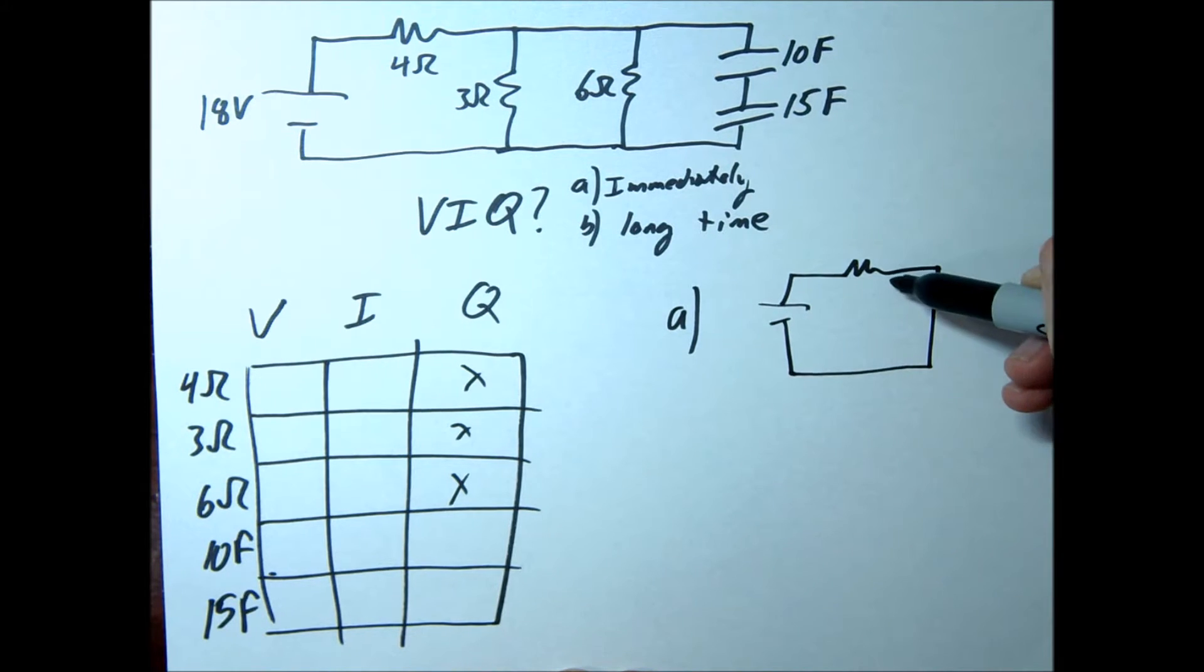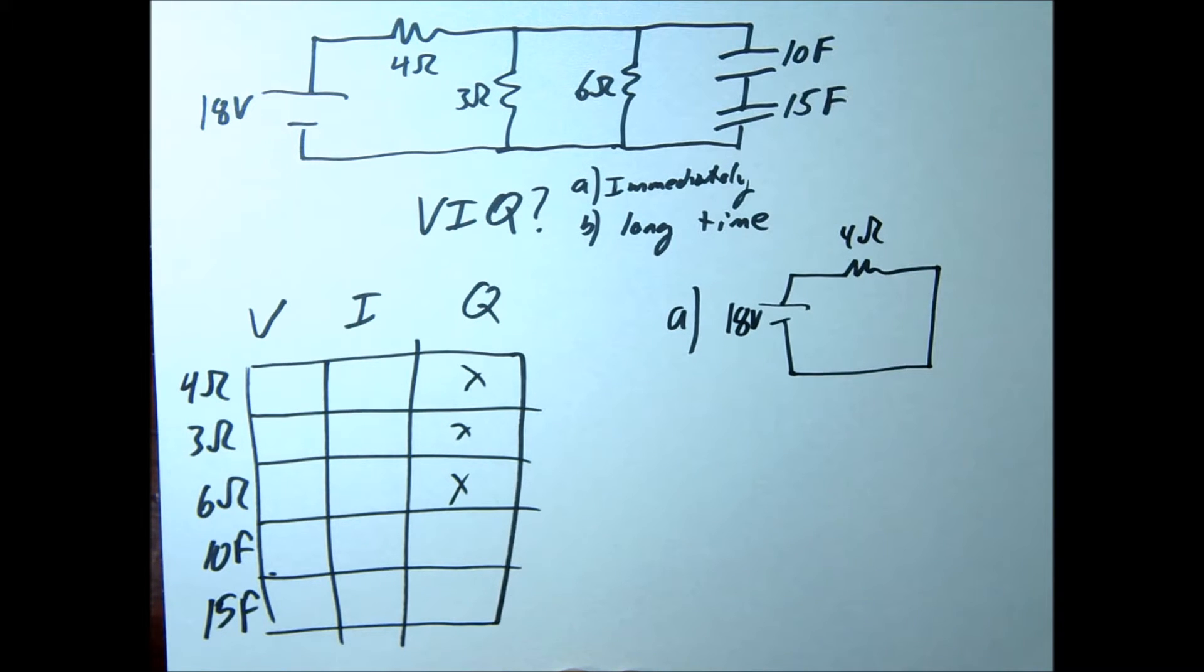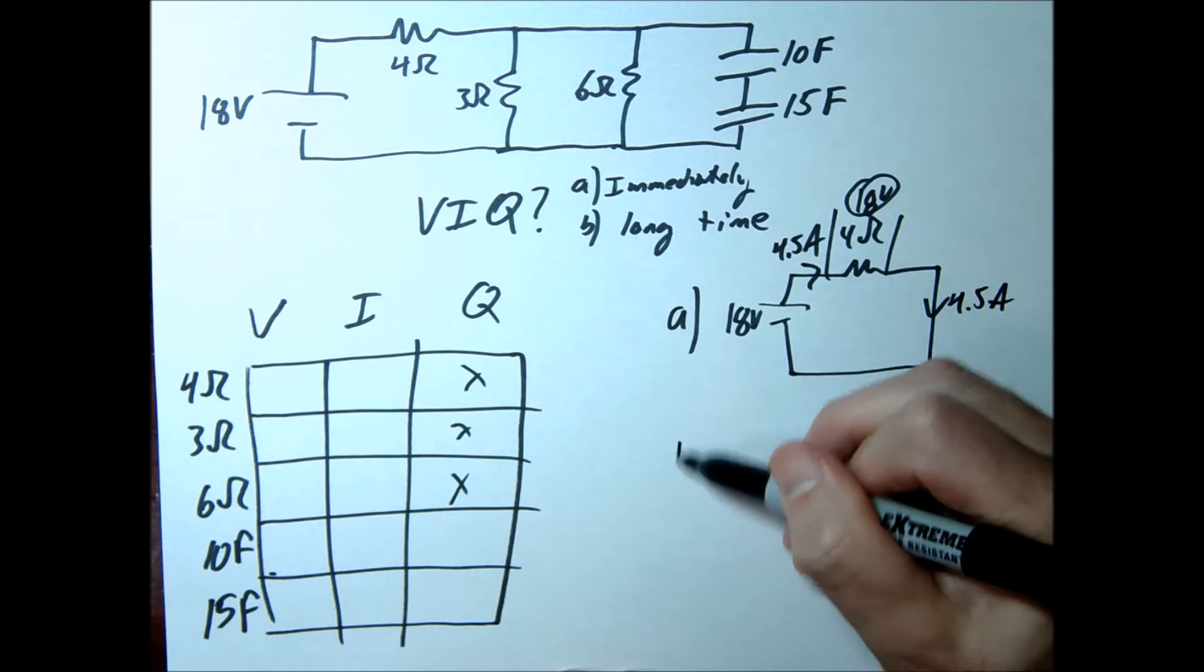Here's our circuit. These two resistors over here, they're not going to get any current flow through them whatsoever. You're just going to have a 4 ohm and an 18 volt circuit. So that's pretty trivial. This voltage would be 18 volts. The current through here would be 18 divided by 4, which is 4.5 amps. The current through the capacitors would also be 4.5 amps.